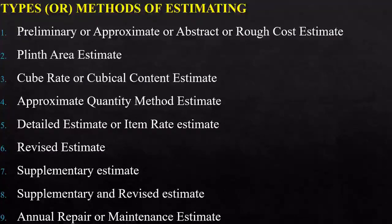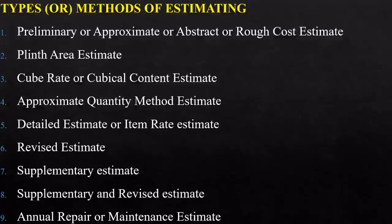The last type of estimate is the annual repair or maintenance estimate. This is also a detailed estimate that has to be prepared to maintain the structure or work in progress so that you can have a proper order and safe condition of your project. These are the nine types of estimating cost in the construction industry.